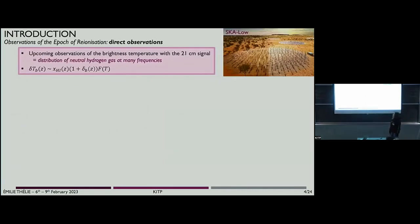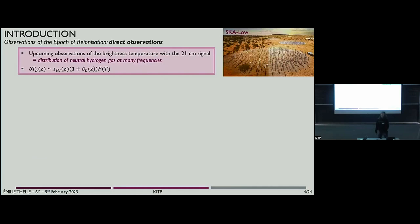What's more interesting in this talk is what we will have with SKA. It will probe the neutral hydrogen gas during the epoch of reionization thanks to the emission of the 21-centimeter hydrogen line. This signal is interesting because it depends on a lot of things — the neutral hydrogen fraction, the distribution and density of baryons, and also the temperature function.